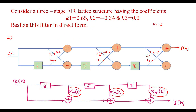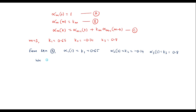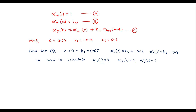To get the direct form structure we need to know α_3(1), α_3(2), and α_3(3). To find α_3(1) we substitute m equal to 3 and k equal to 1 in equation (c).